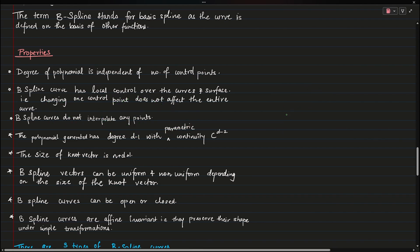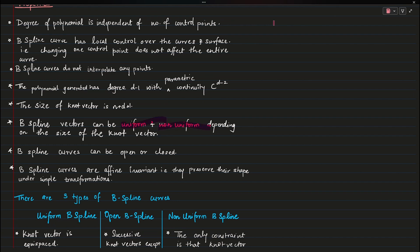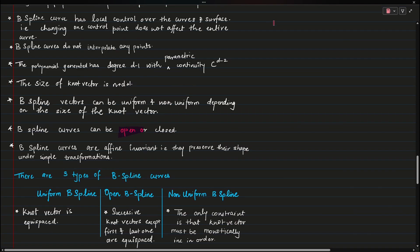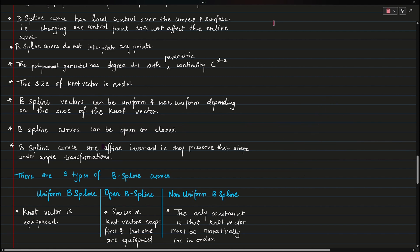B-spline curves do not interpolate any points. The polynomial generated has a degree d minus 1 with continuity C to the power d minus 2. The size of a knot vector is d plus n plus 1, where n is the number of points and d is the degree. B-spline vectors can be uniform or non-uniform depending on the size of the knot vector, which defines the shape. B-spline curves can also be open or closed, unlike Bezier curves which are only open.